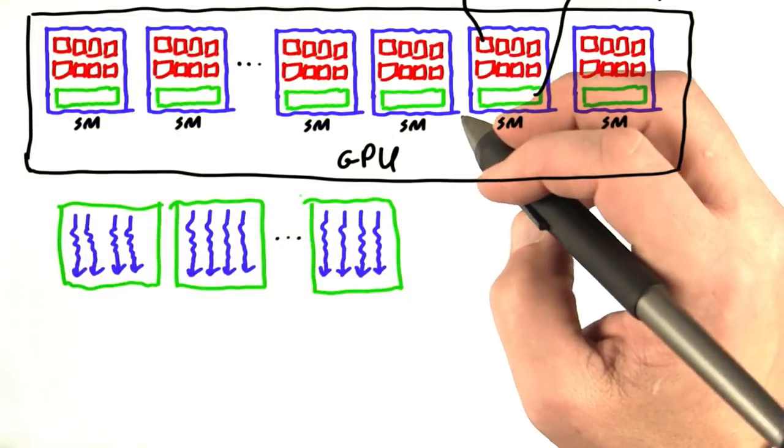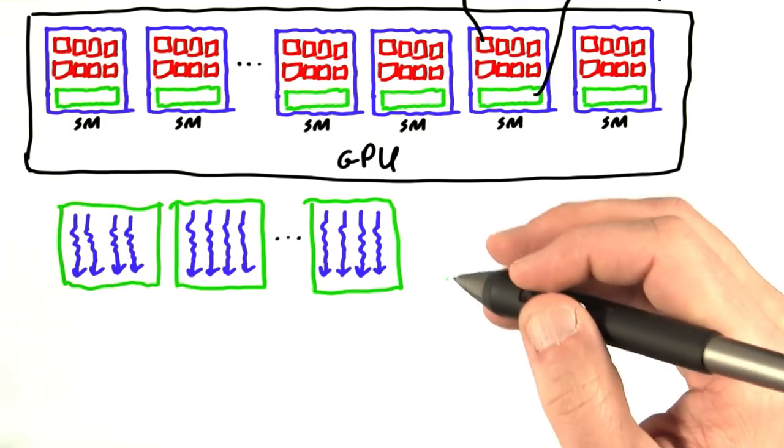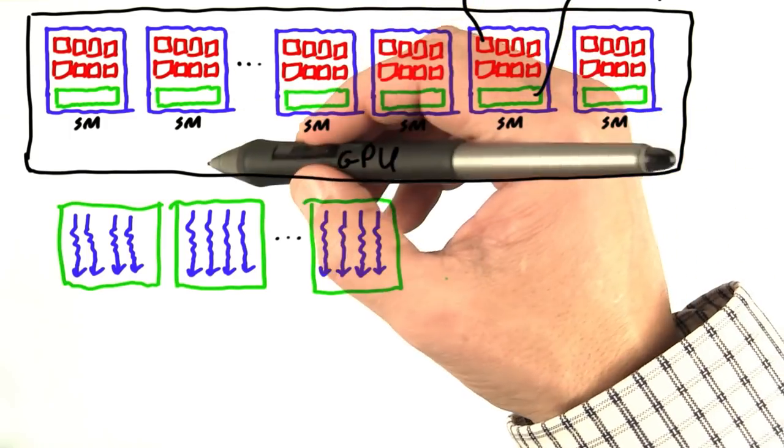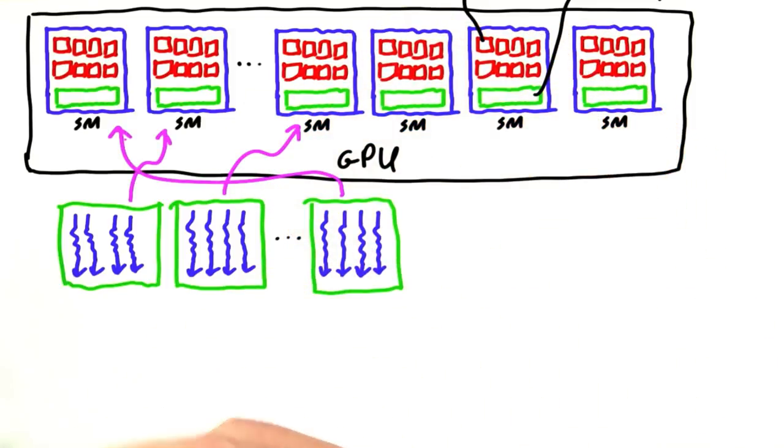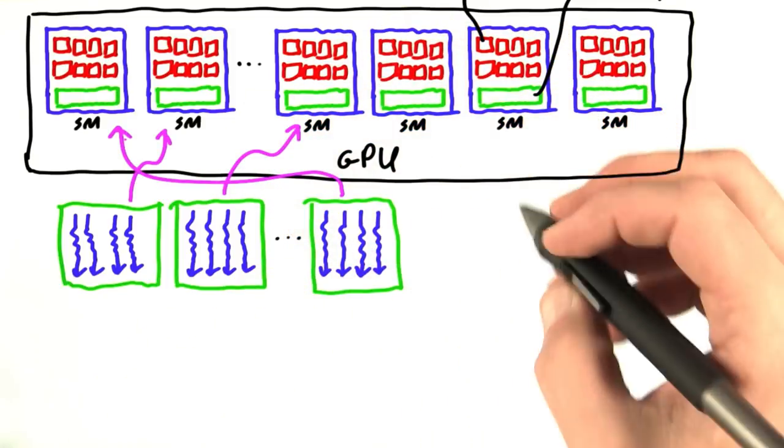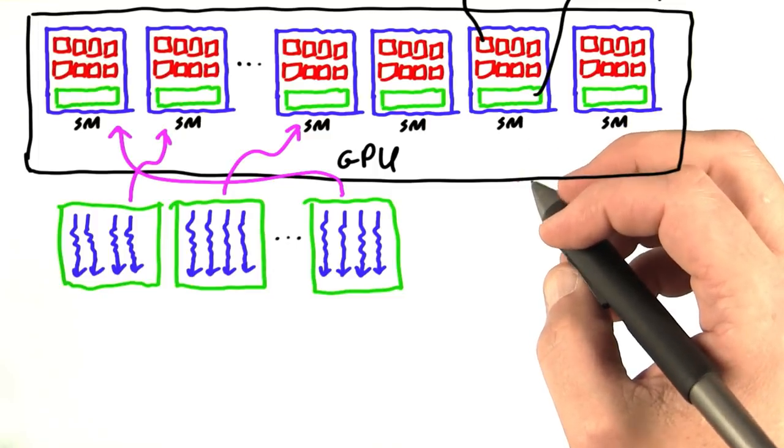So when you've got a CUDA program with a bunch of threads organized into thread blocks, the important thing to understand is that the GPU is responsible for allocating blocks to SMs. Let me say that again because it's really important. The GPU is responsible for allocating the blocks to the SMs.